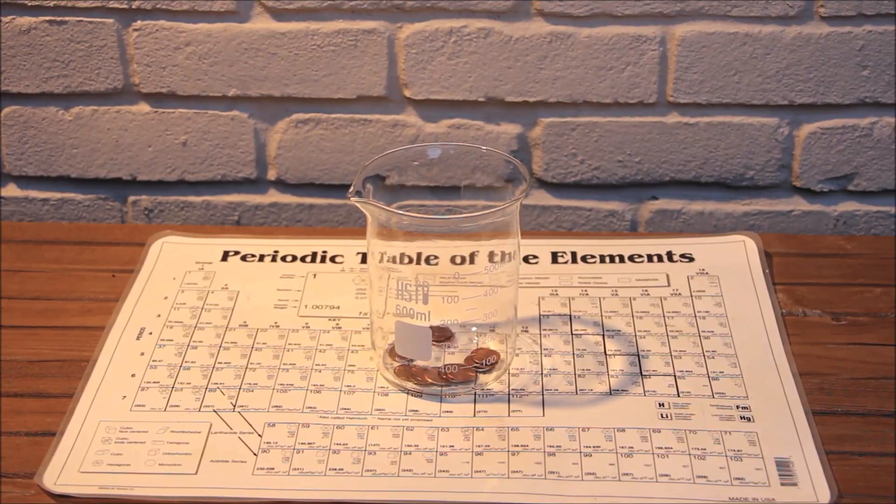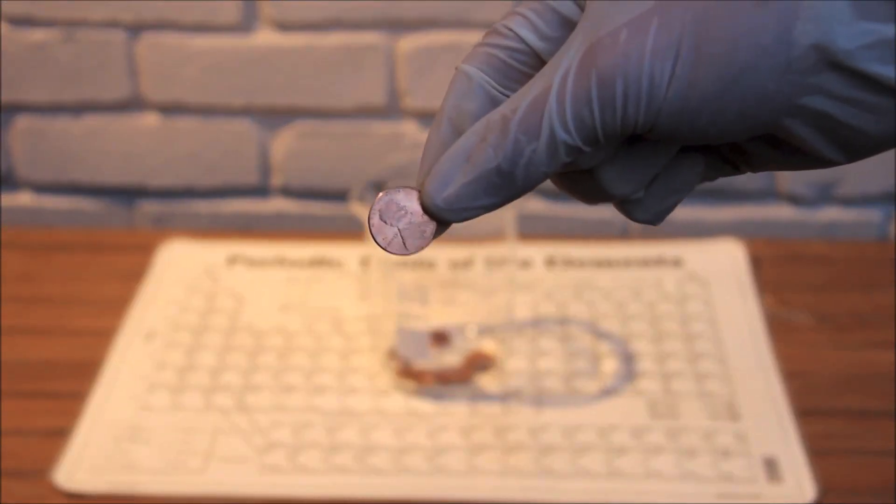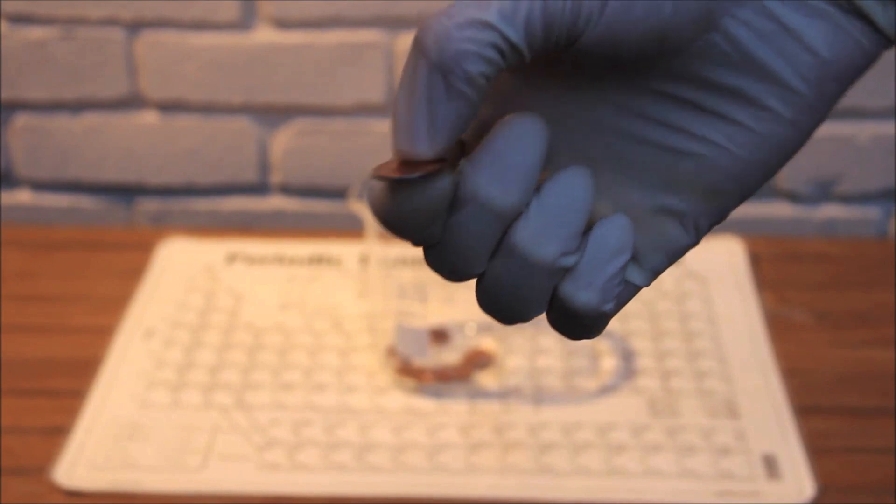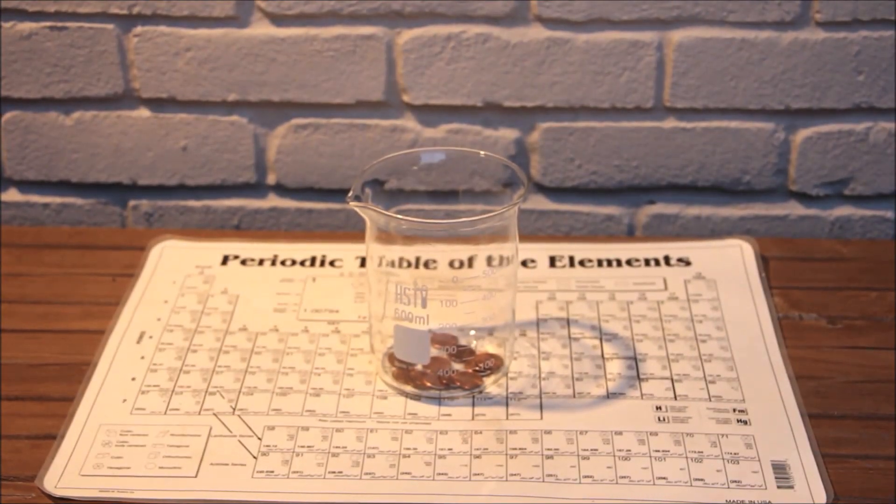For this experiment, you will need post-1982 pennies because they contain a zinc core. Here you can see that this penny has a zinc core, which is visible since I sanded the outer layer of copper around the rim of the penny. Be sure to sand off a small layer of copper on each penny to expose the zinc underneath.